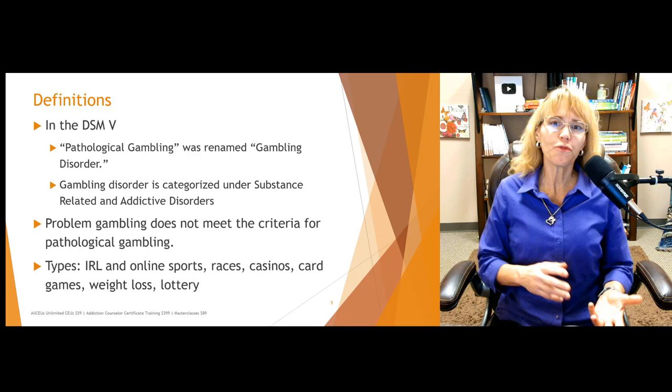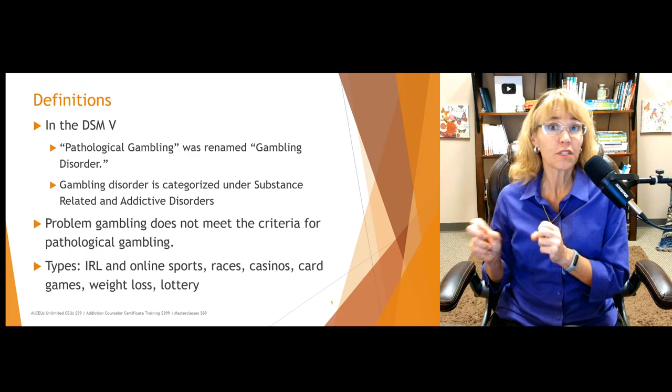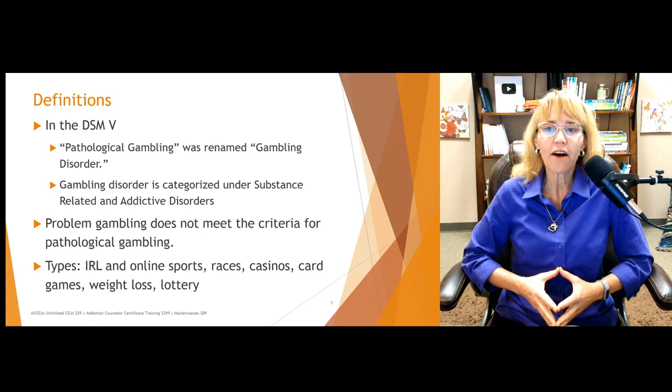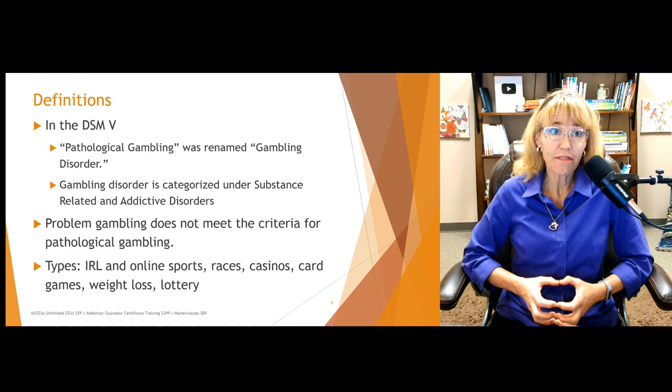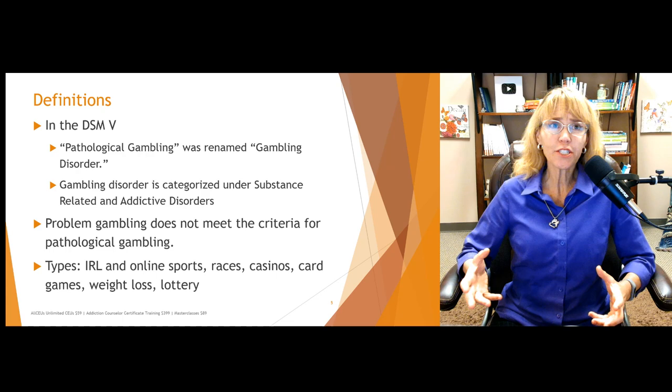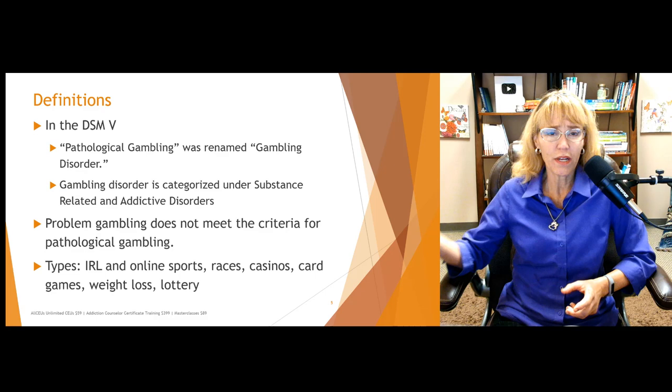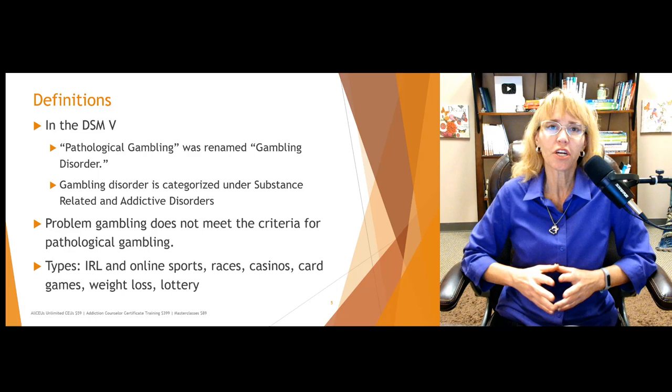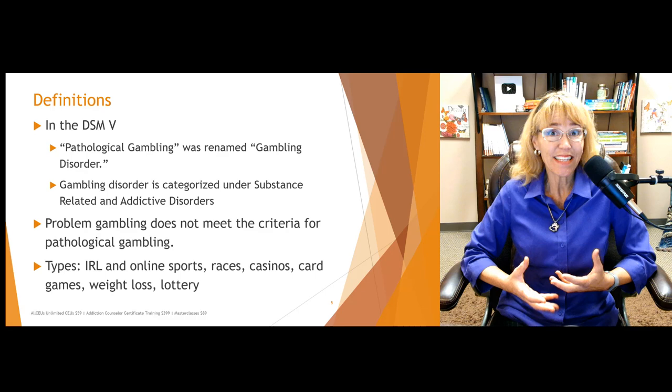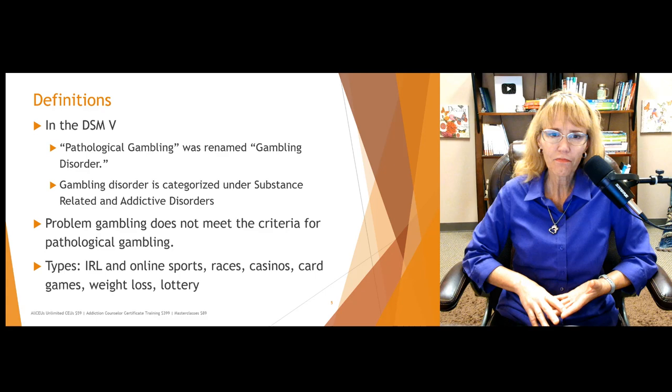In the DSM-5, pathological gambling was renamed gambling disorder, moving it into a full-blown disorder classification. Gambling disorder is now categorized under substance-related and addictive disorders. The DSM-5 and DSM-5-TR have added this category and are starting to recognize the addictive nature of process and behavioral activities — such as gambling and internet gaming addiction — as opposed to just assuming that addiction is only substance-related.